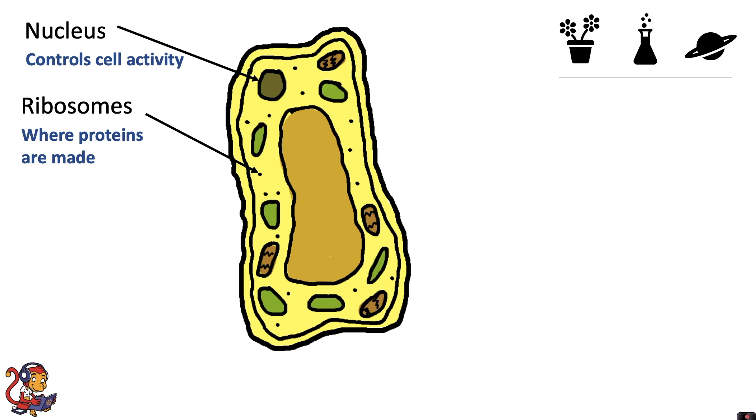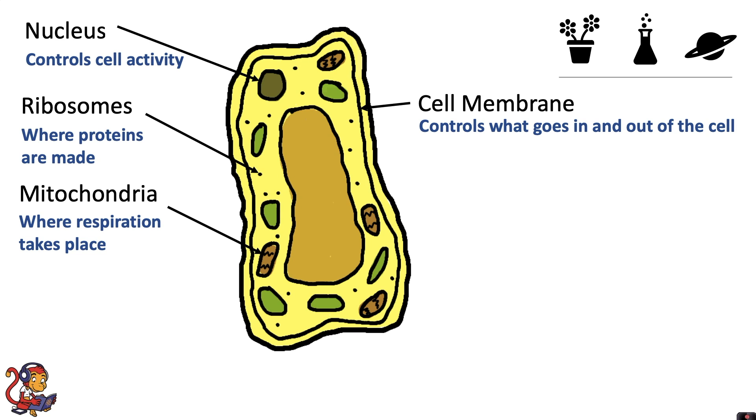Ribosomes to make proteins, mitochondria for respiration, the cell membrane to control what goes in and out of the cell, and also cytoplasm for chemical reactions to take place.